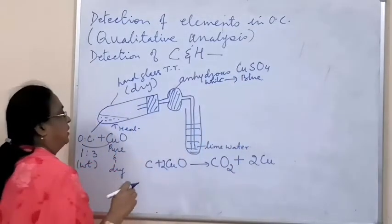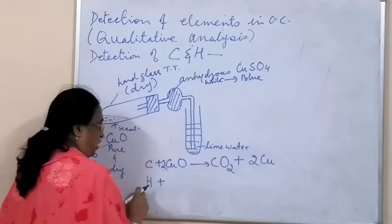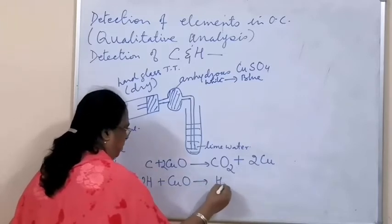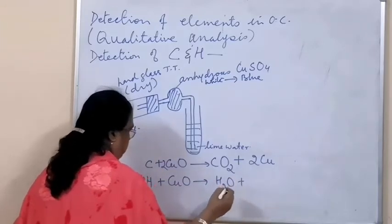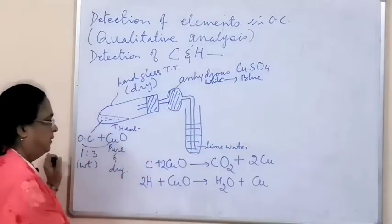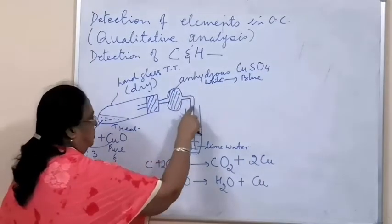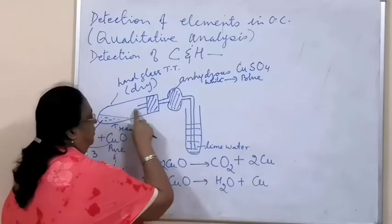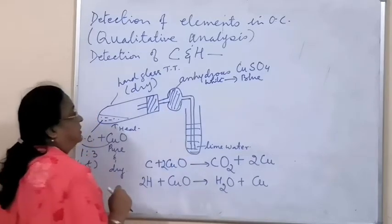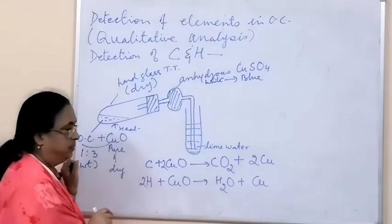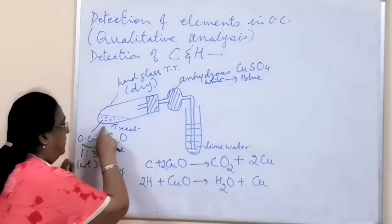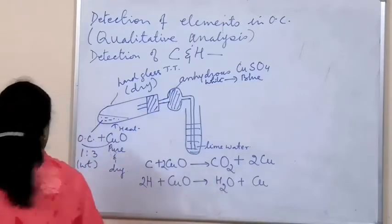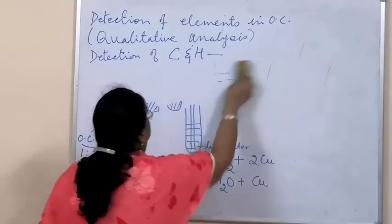The blue colour indicates the presence of water — this is a test for water. This means hydrogen from the organic compound is also combining with cupric oxide and forming water vapour. So carbon dioxide passes into the lime water turning it milky, and water vapour turns the anhydrous copper sulfate from colourless to blue. This confirms that the organic compound contains carbon and hydrogen.